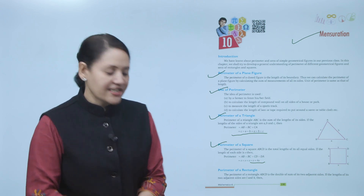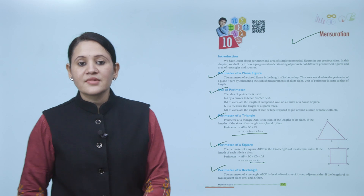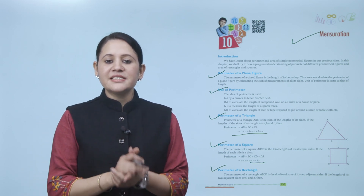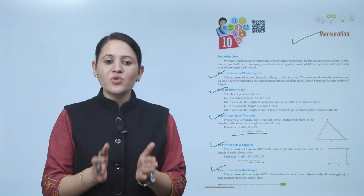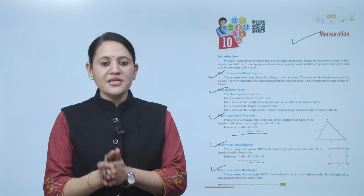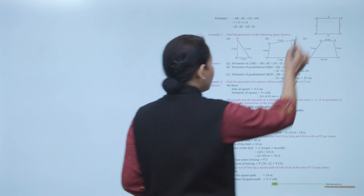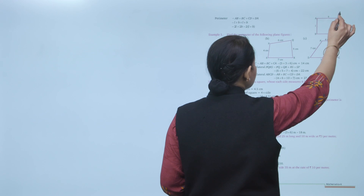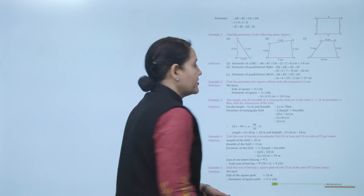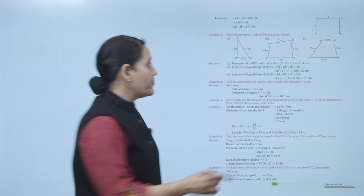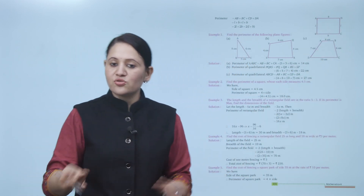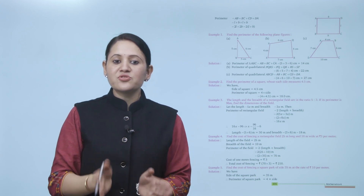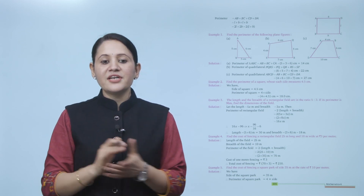Next is perimeter of a rectangle. The perimeter of rectangle ABCD is double the sum of two adjacent sides. If the lengths of the two adjacent sides are L and B, then perimeter equals AB plus BC plus CD plus AD, which equals L plus B plus L plus B — taking 2 as common, perimeter equals 2 times (L plus B).